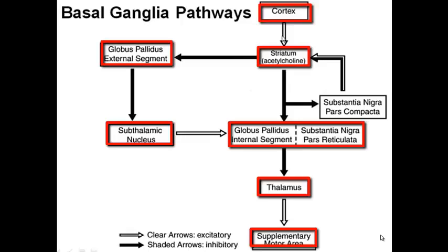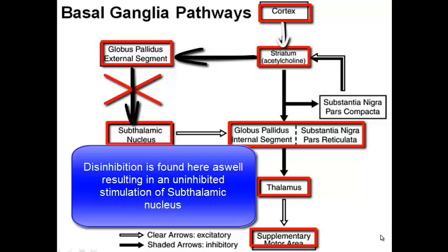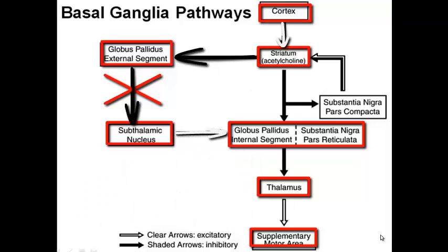Now let's do the indirect pathway. It starts the same way — the cortex signals to the striatum, which sends inhibitory GABA to the external part of the globus pallidus, which in turn cannot send its own inhibitory signals to the subthalamic nucleus. Once again, you see double inhibition — disinhibition — which results in excitation from the subthalamic nucleus. This sends glutamate to the internal part of the globus pallidus in combination with the reticular part of substantia nigra. Since these become active, they send inhibitory signals to the thalamus, so the thalamus cannot send excitatory signals to the cortex.